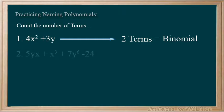The second example, you should count four terms. And since mathematicians stop the specific naming at three, we know this is a polynomial.